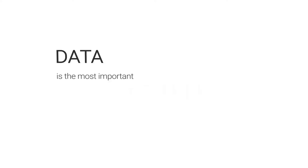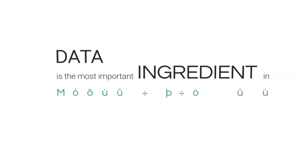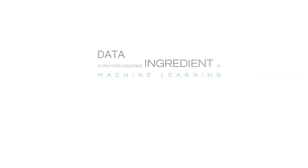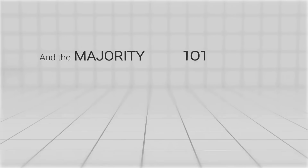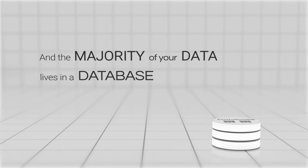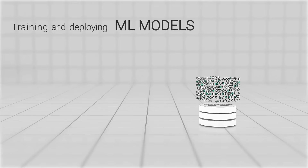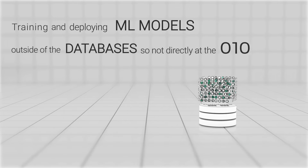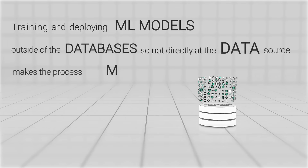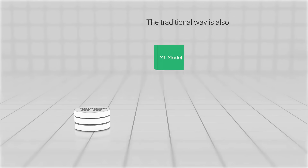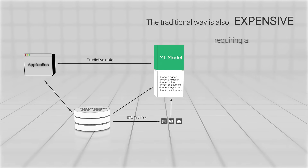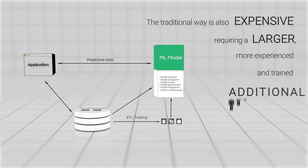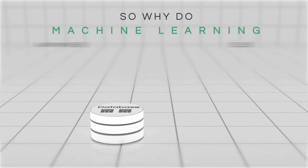Data is the most important ingredient in machine learning, and the majority of your data lives in a database. Training and deploying ML models outside of the databases, so not directly at the data source, makes the process complex. The traditional way is also expensive, requiring a larger, more experienced and trained additional personnel. So why do machine learning anywhere else?